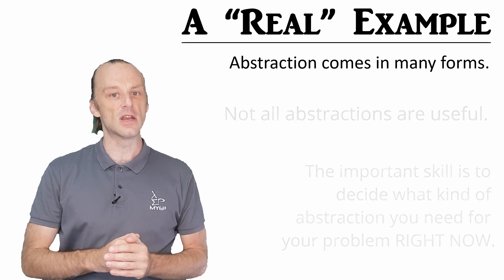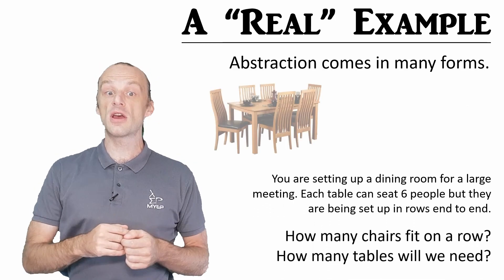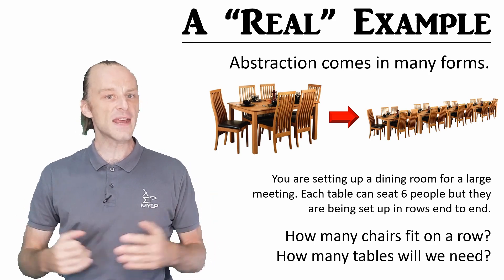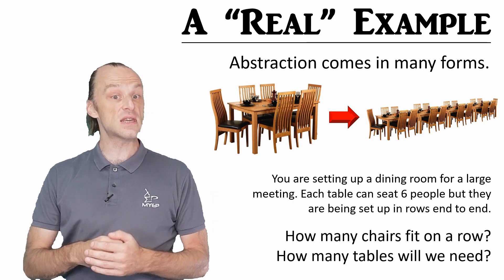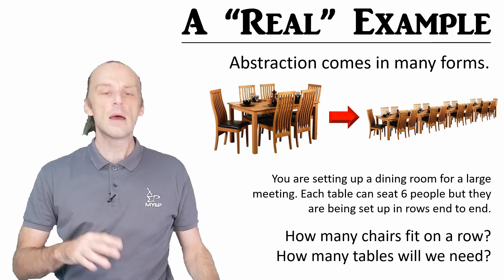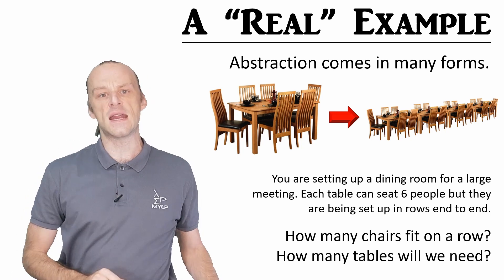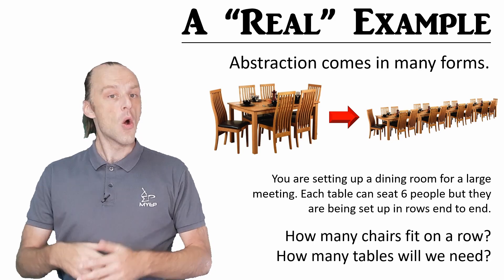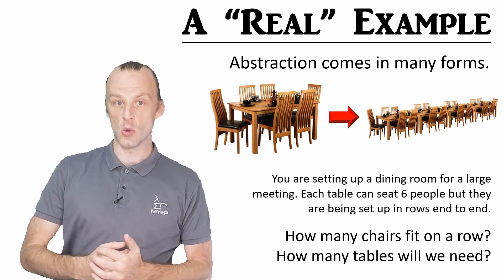Like in this situation, imagine you are organising a large dinner party at a hotel. You have rectangle tables which can seat six people around them, but you're going to put them end to end in rows. How do you work out how many chairs are in each row, or how many tables you need altogether?